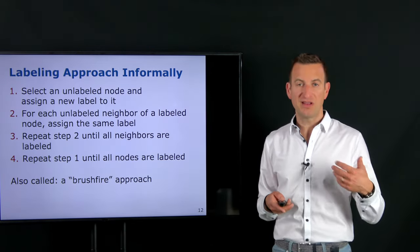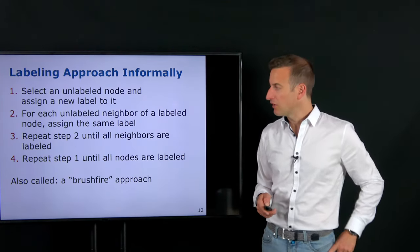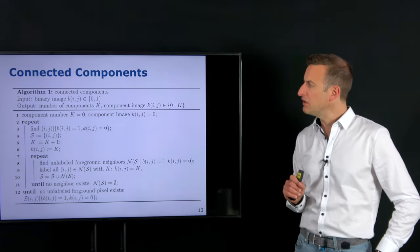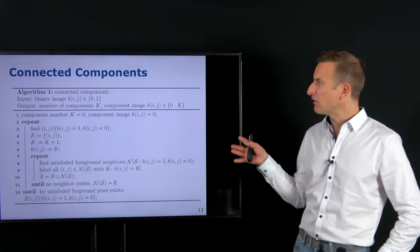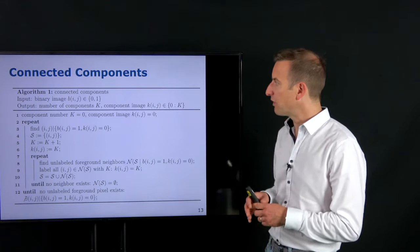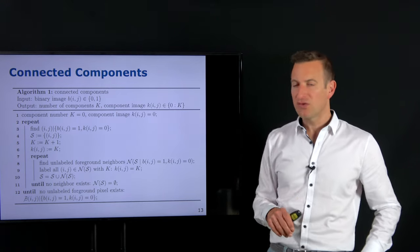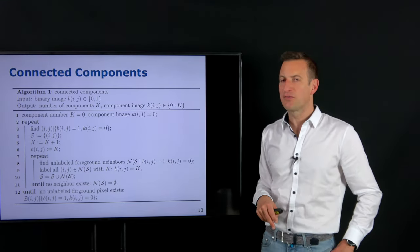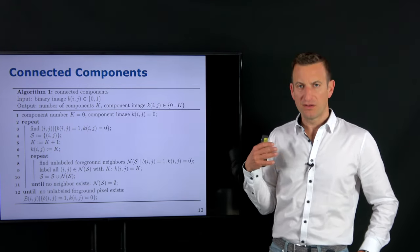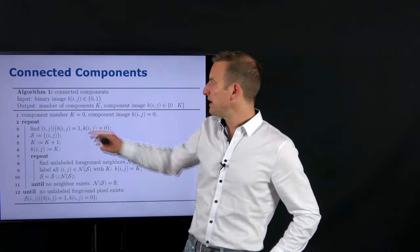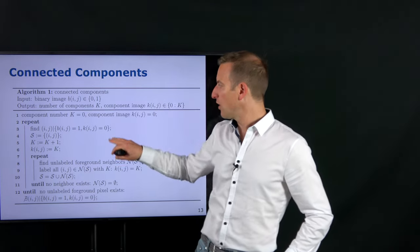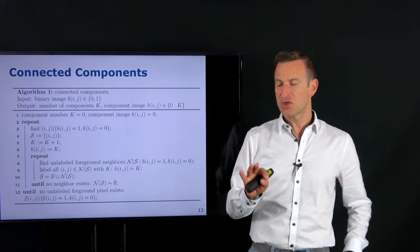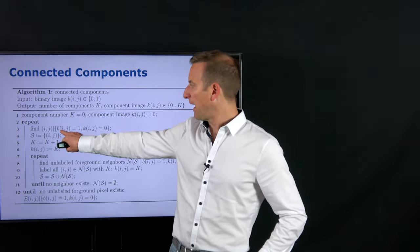We can write this down more formally. We have a binary input image B of zeros and ones, and we want to output a component image K providing a label between 0 and K, where capital K is the number of components. We start by setting K to zero, initializing the component image as all zeros, then searching for one pixel where B[i,j] equals one and the component image equals zero — meaning it is a black, unlabeled pixel.